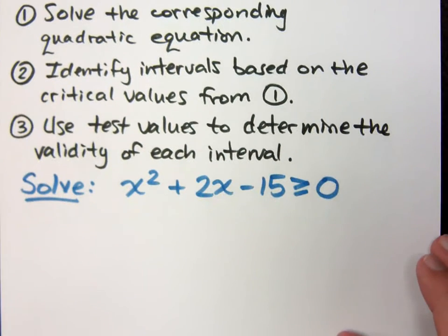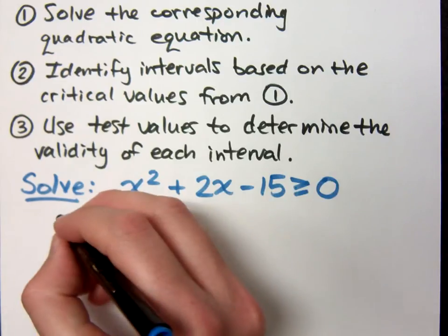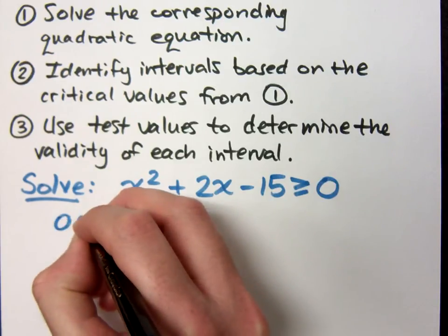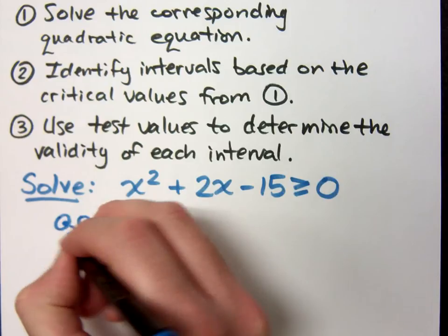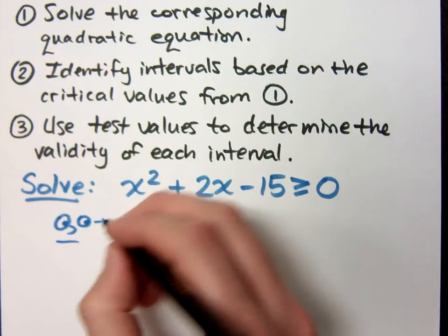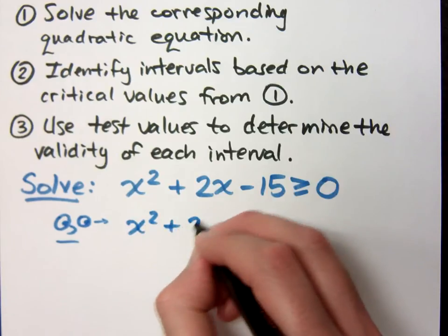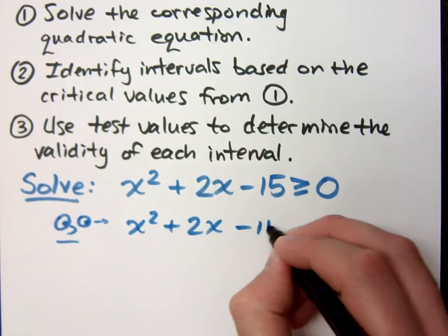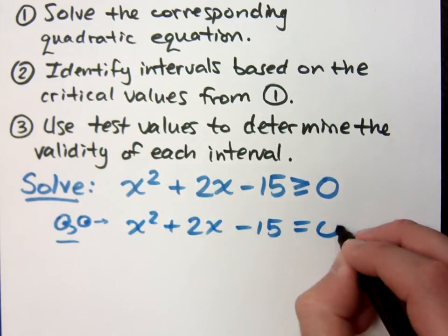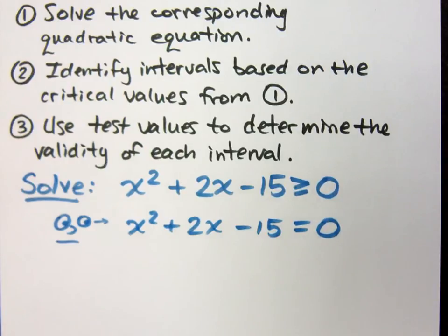So instead, what you do is you solve the corresponding quadratic equation. So you take this and you look at it a little bit differently. You say that this is x squared plus 2x minus 15 is equal to zero.